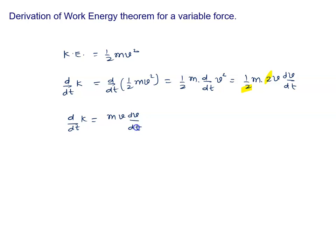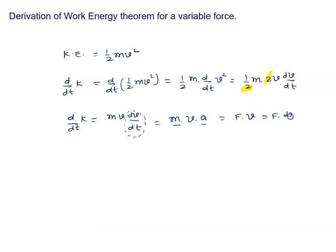Now, dv/dt is known as acceleration, so we can write d/dt of K equals mass times velocity times acceleration. Mass times acceleration is force, so this becomes force times velocity. Velocity can further be written as dx/dt. Therefore, d/dt of kinetic energy equals F times d/dt of position x.